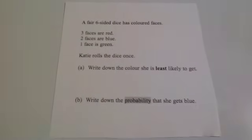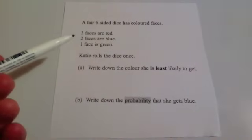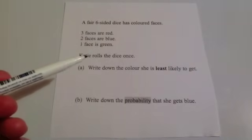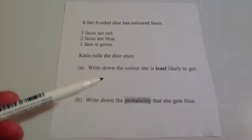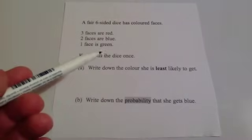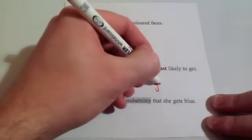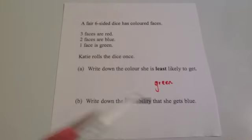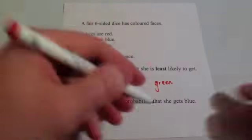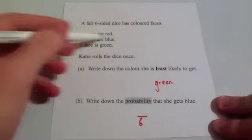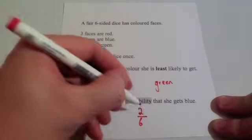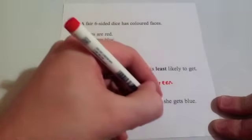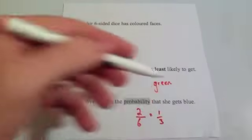Here's a typical question. A six-sided dice has coloured faces: three faces are red, two faces are blue, and one face is green. Katie rolls the dice once. Write down the colour she is the least likely to get. The answer is green, because there's only one face that is green, so green is the least likely colour. Then it says write down the probability she gets blue. Altogether there are six faces, so the denominator is six, and two of them are blue, so it's two out of six, or two-sixths. Cancel it down to one-third. So the probability of getting a blue is one-third.